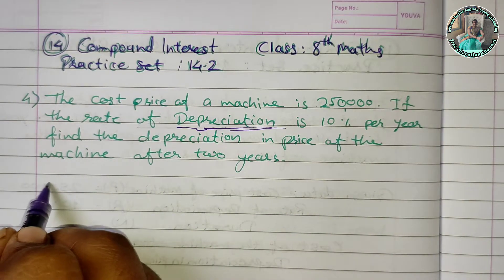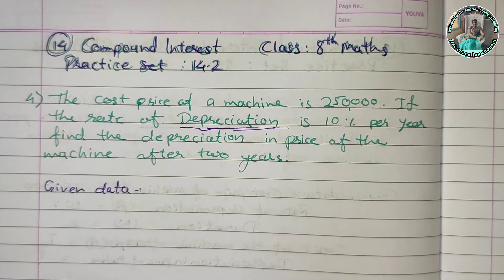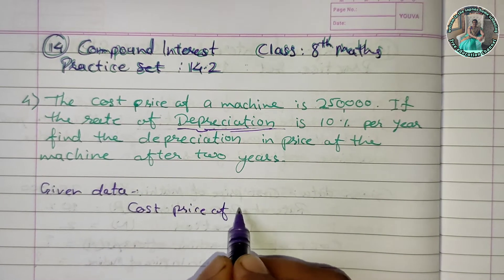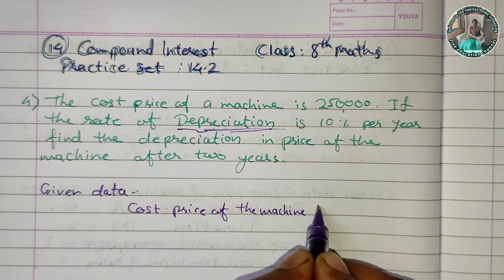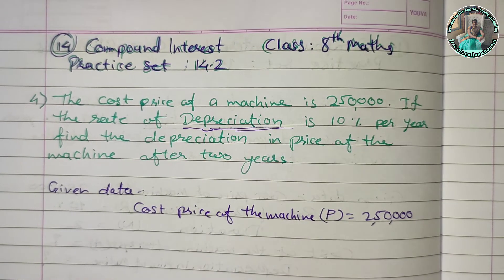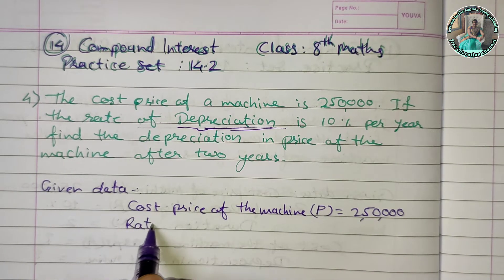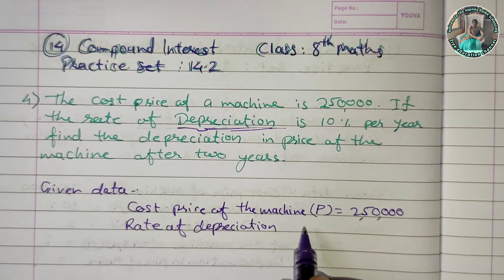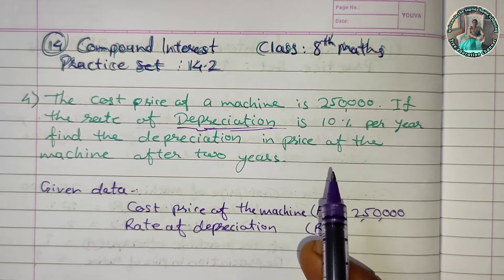Given data: what is the cost price of the machine? The cost price of the machine is Rs. 2,50,000 per year. This is not an appreciation — this is a reduction.